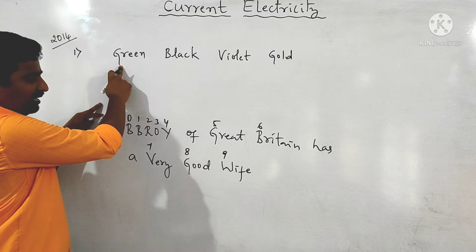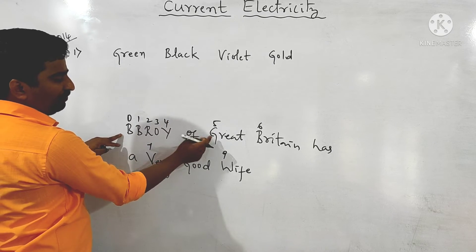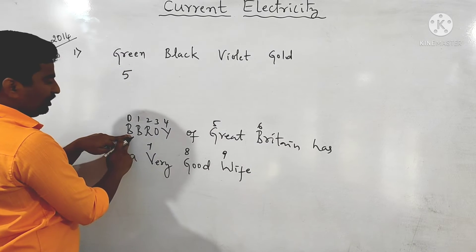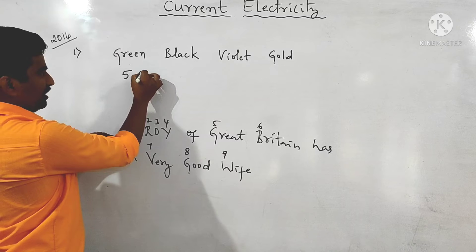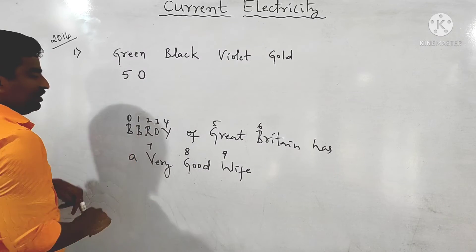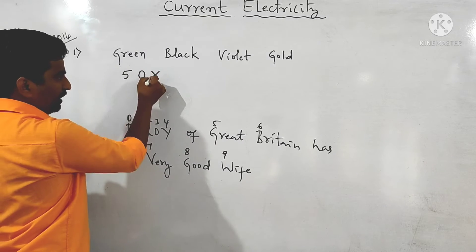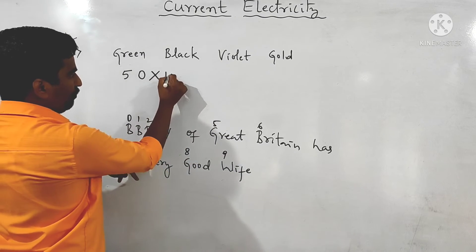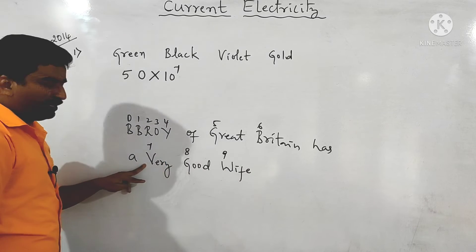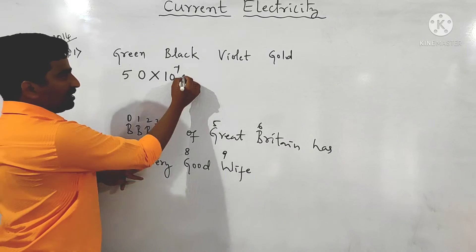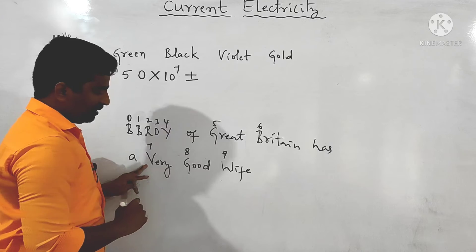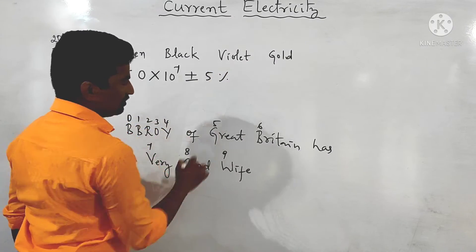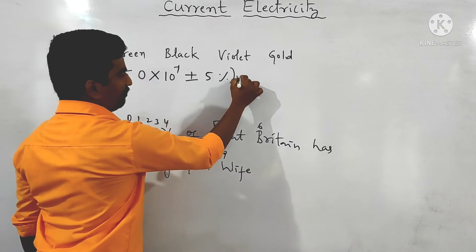Black corresponds to 0, so the second digit is 0. Violet corresponds to 7, so the multiplier is 10 to the power of 7. Gold indicates a tolerance of ±5%.